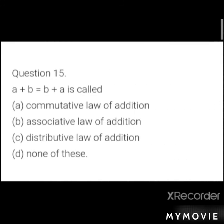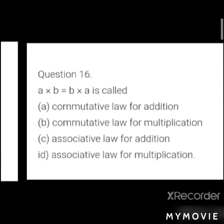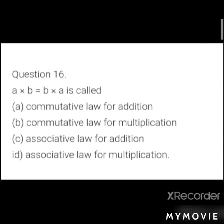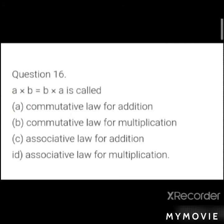MCQ 7: a + b = b + a is called? Options: a) commutative law of addition, b) commutative law for multiplication, c) associative law for addition, d) associative law for multiplication. Here only the order changes but the operation sign is multiplication — Answer: b) commutative law for multiplication.